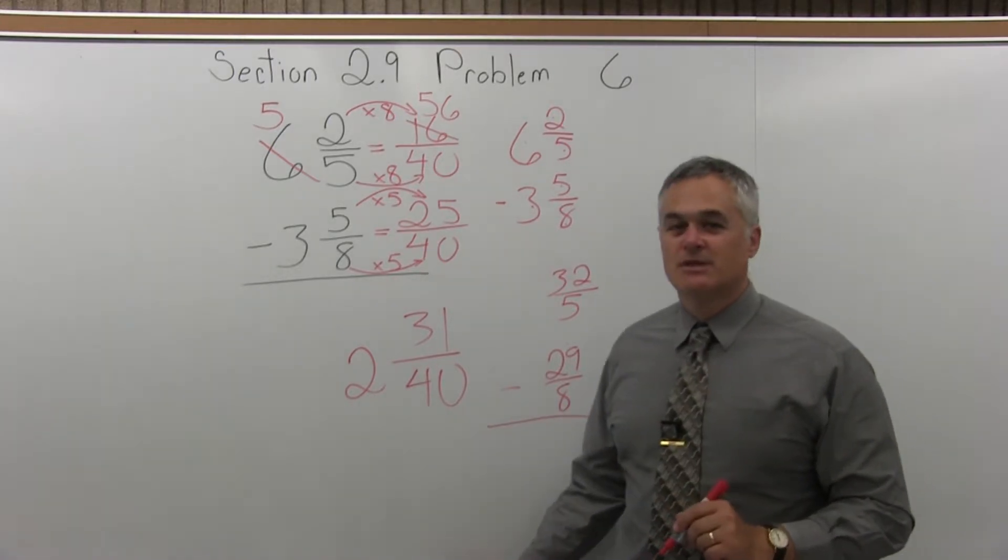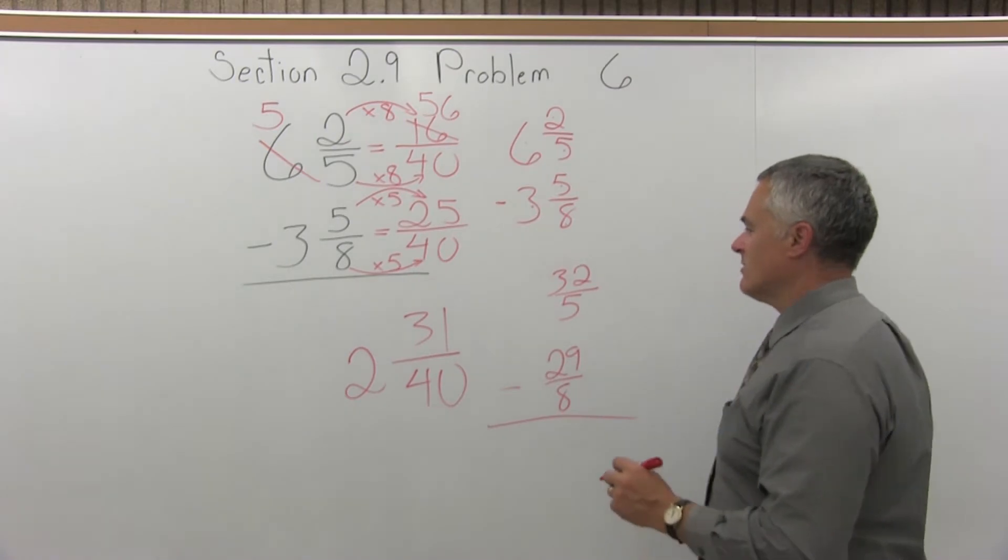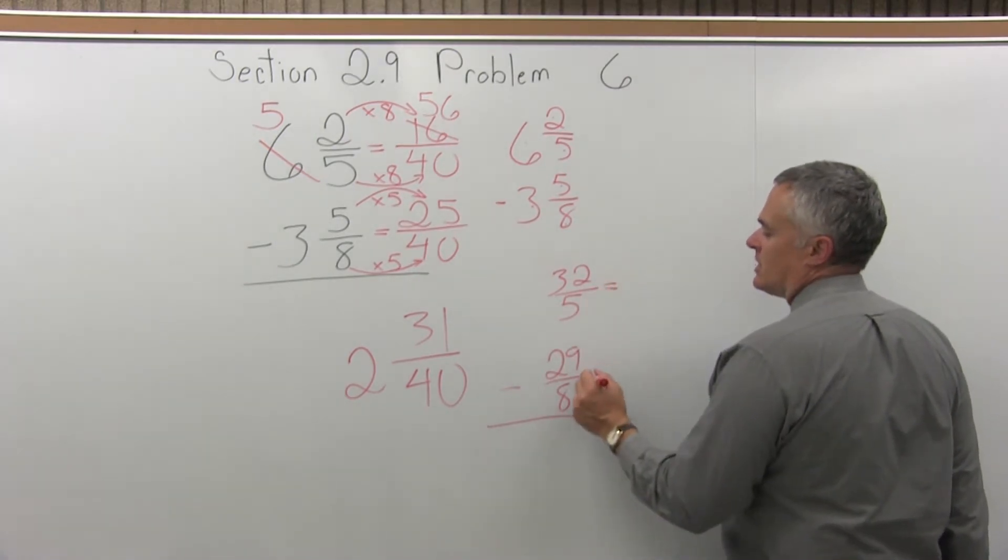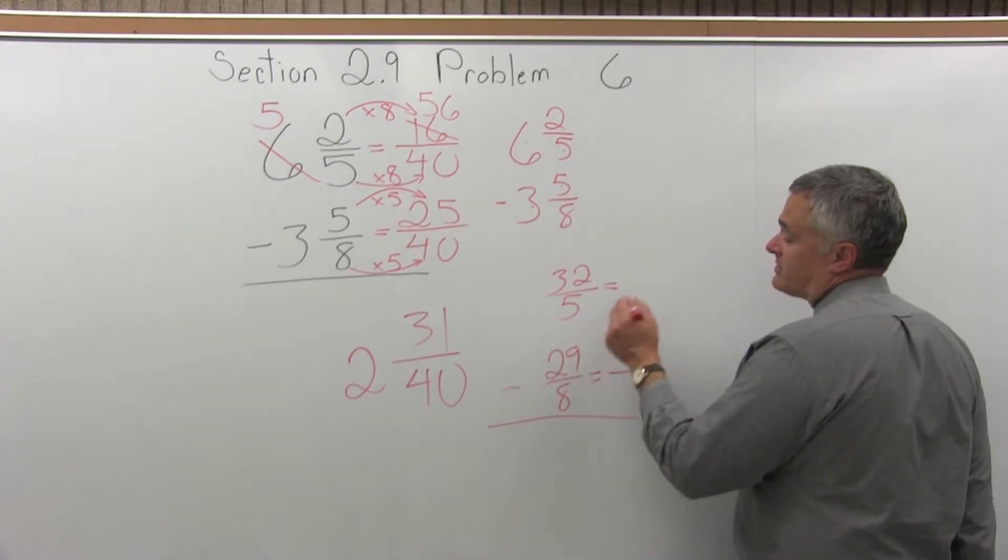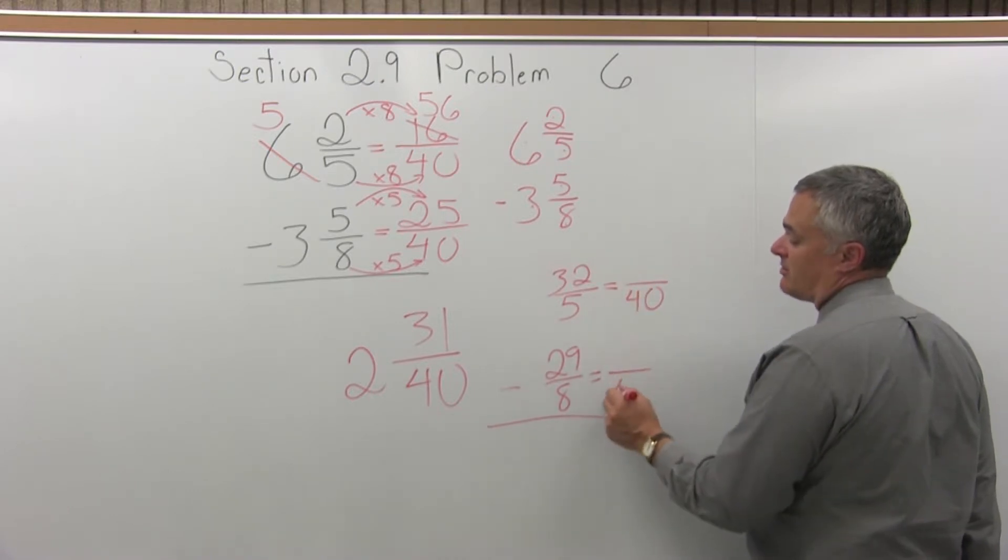Subtract those improper fractions. I won't have to borrow now. My denominators are still 5 and 8, so 40 is still a good common denominator.